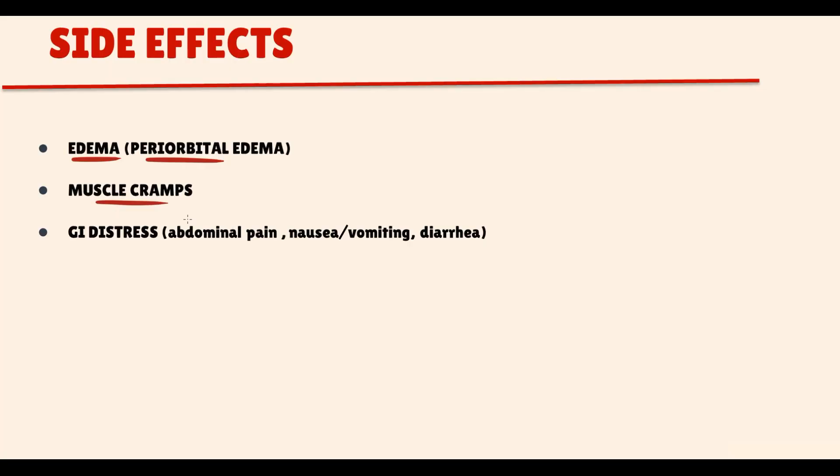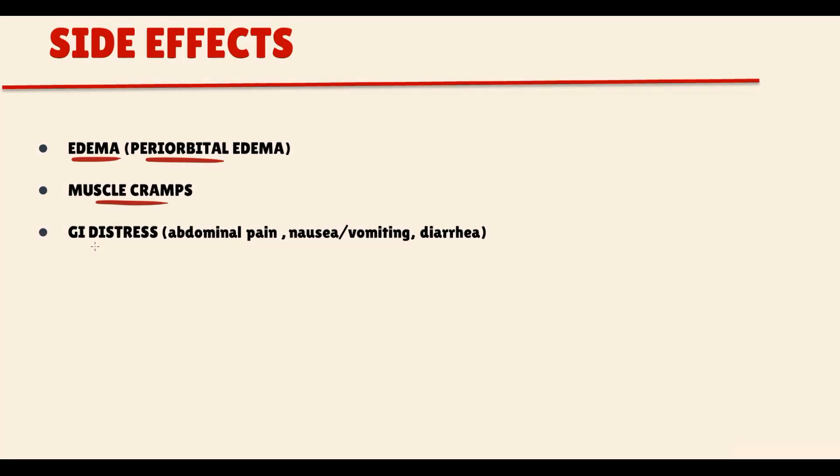Other side effects of Imatinib are related to irritation of GI tract mucosa: abdominal pain, nausea, vomiting, and diarrhea.